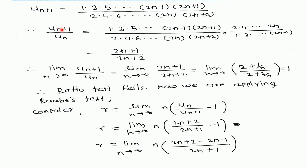First I will show that the ratio test fails, and then apply Raabe's test. Find the limit of UN+1/UN. Put in the values of UN+1 and UN — all terms up to 2n cancel in the denominator and up to (2n−1) cancel in the numerator — so UN+1/UN = (2n+1)/(2n+2). Taking the limit as n tends to infinity gives a limit equal to 1. Therefore the ratio test fails.